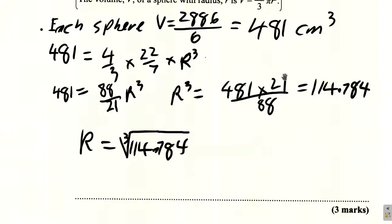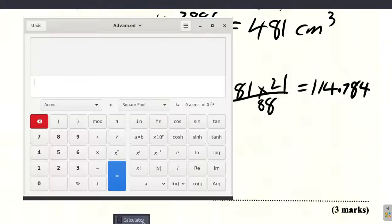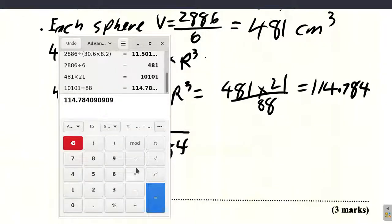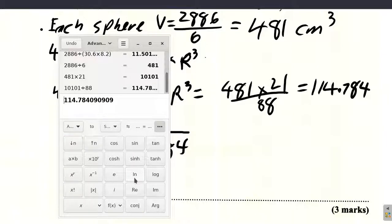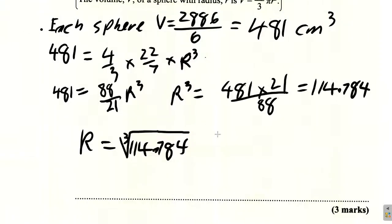So r now will be the cube root of 114.784. So let's reach back for our calculator. We want to find the cube root of that number. Cube root. I don't have a cube root here, but remember, when you find the cube root of a number, the same as raising it to the power of one third. So we raise it to open bracket 1 over 3 close bracket equal 4.86. So we have 4.86 centimeters would be the radius of each sphere.